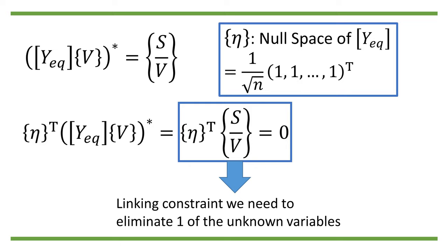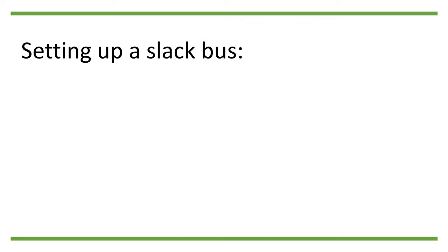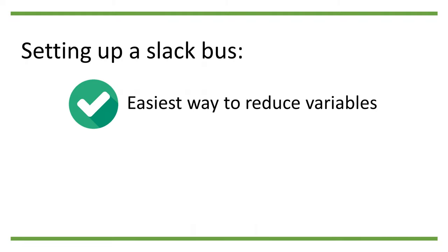So eta transpose dot s divided by v equals 0 is the linking constraint we need to eliminate one of the n unknown variables in the power flow equation. Therefore, while setting up a slack bus is probably the most simple way to reduce the unknown variables, it is far from the only way.